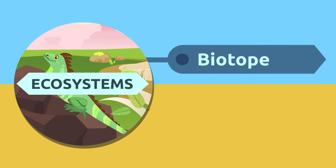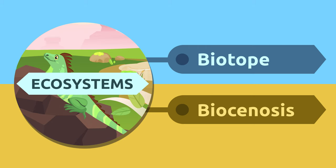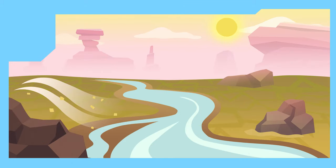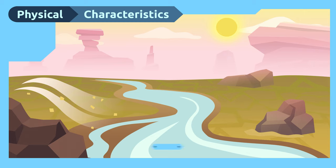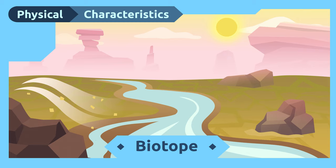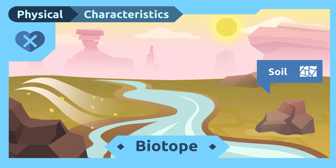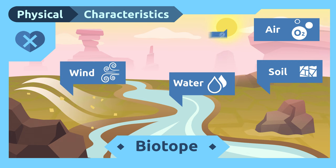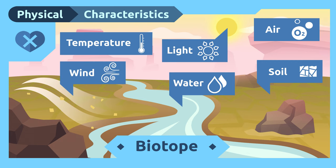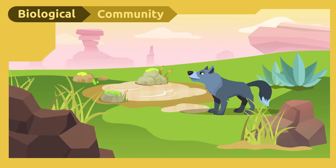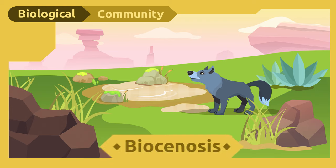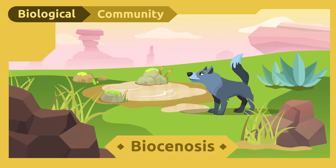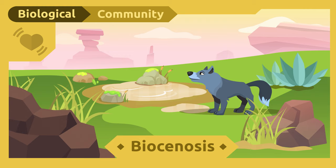Ecosystems consist of a biotope and a biocenosis. The physical characteristics of the surroundings are called a biotope. These characteristics include non-living elements like the soil, the water, the air, the wind, the light, or the temperature. The biological community that lives in those surroundings is called biocenosis — that is to say, the living beings that live in a physical area.